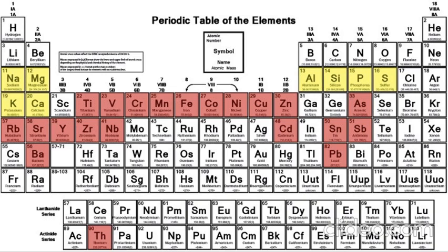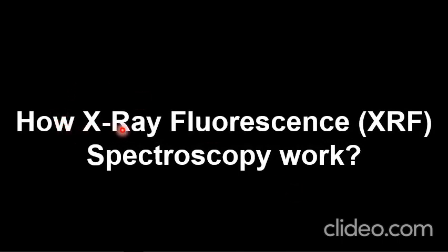It is not necessary that every XRF machine can determine 90 percent of the elements of the periodic table. The range of elements detectable depends on the sensitivity, accuracy, and efficiency of the machine being used. So the capability to analyze nearly 90 percent of the periodic table depends on the specific XRF instrument employed.